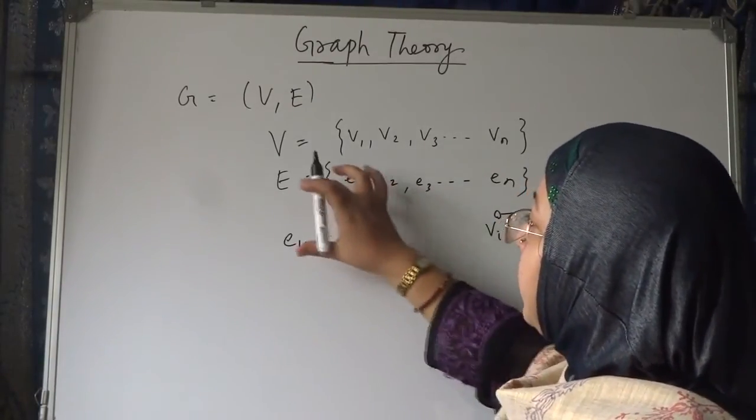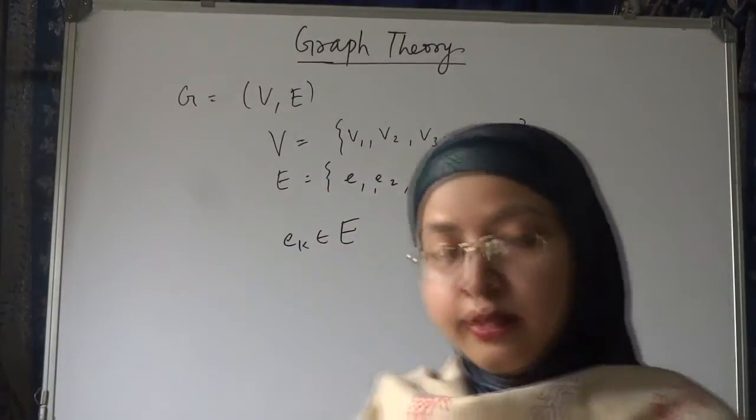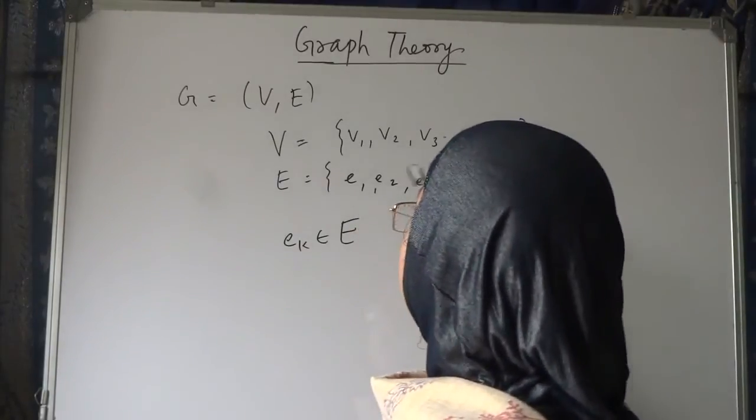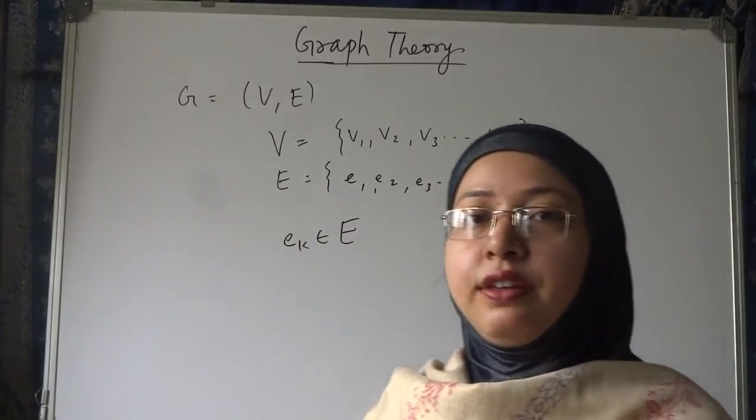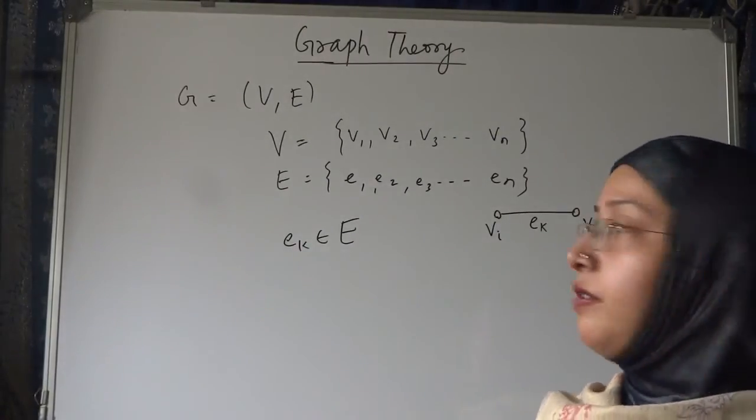EK should belong to E, means EK should be present in this set. Because we are assuming that these are the edges present in our graph, E1 to EN. Okay, you can have any number of edges in your graph.